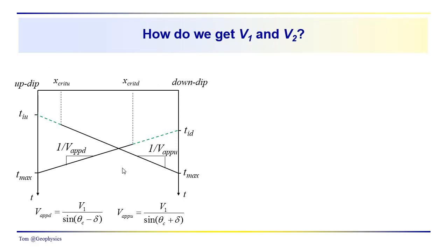Remember last time we were talking about critical refractions observed on a dipping refractor. We indicated that if you went out in the field doing a typical refraction survey, picked a location for your source, and strung your geophones out in some direction arbitrarily, you would see your critically refractive event and measure a velocity — but that velocity, the reciprocal slope of the critical refraction arrivals, would be an apparent velocity.